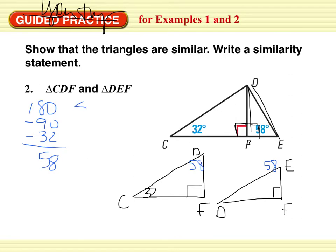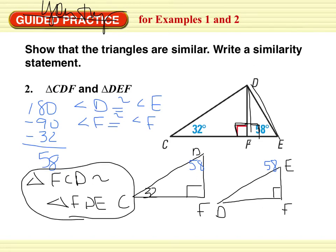So I have angle D is congruent to angle E. Angle F is congruent to angle F. I can now say that triangle FCD is similar to triangle FDE because of the angle angle postulate.